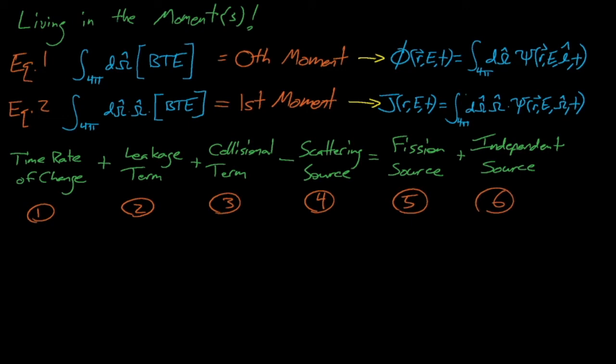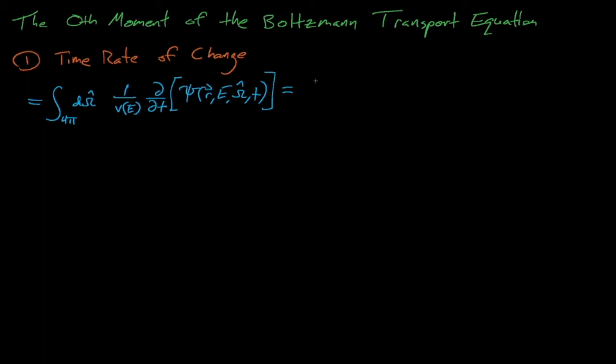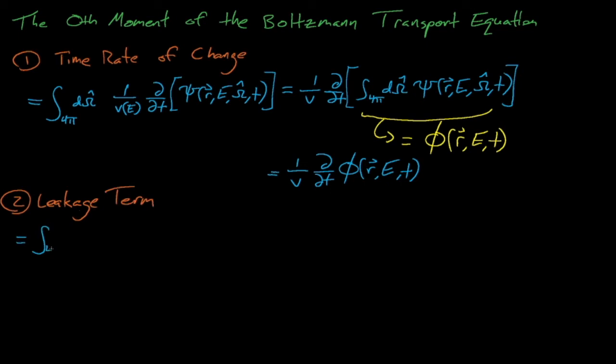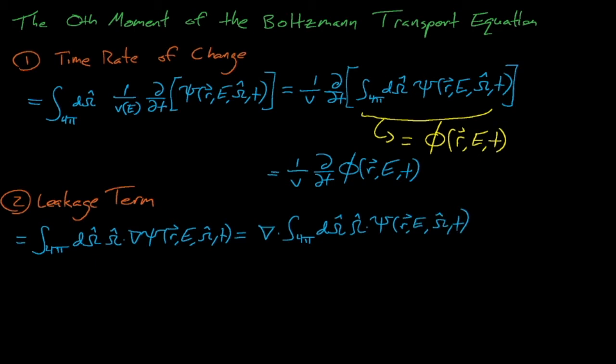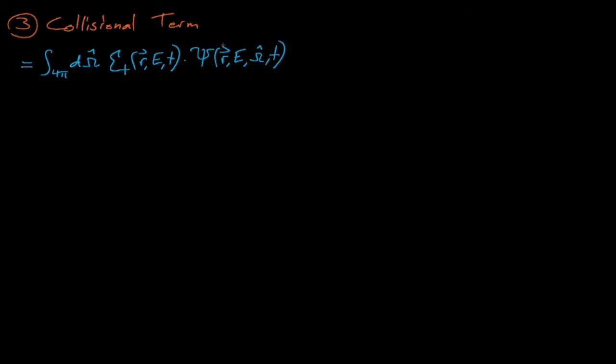Taking the zeroth moment of the time rate of change term is actually fairly simple. All we have to do is move the integral over omega inside of the time derivative, which transforms this term into 1 over v times the time derivative of the scalar flux. When we take the zeroth moment of the leakage term, we must again change the order of operations, and through a little bit of math magic, we can move the del operator outside of the integral, which turns out to be the first moment of the angular flux, or the neutron current. Our del operator then returns to turn this term into del operating on the current j. The collisional term is perhaps the easiest to compute. The total cross-section is not a function of omega, so we move it outside of the integral and find that this term becomes sigma total times the scalar flux.